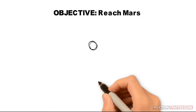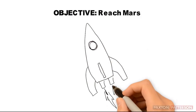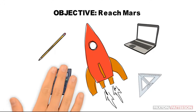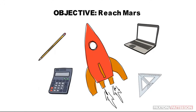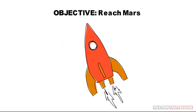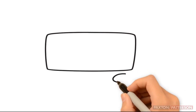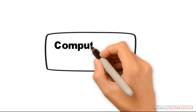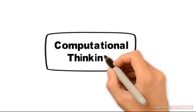Imagine you are asked to solve a complex problem, and to make things even more challenging, you cannot use the tools you'd normally use to help solve the problem. Sounds pretty difficult, right? Without a strategy, it certainly would be. Today, we are going to demonstrate a common process for solving complex problems known as computational thinking.